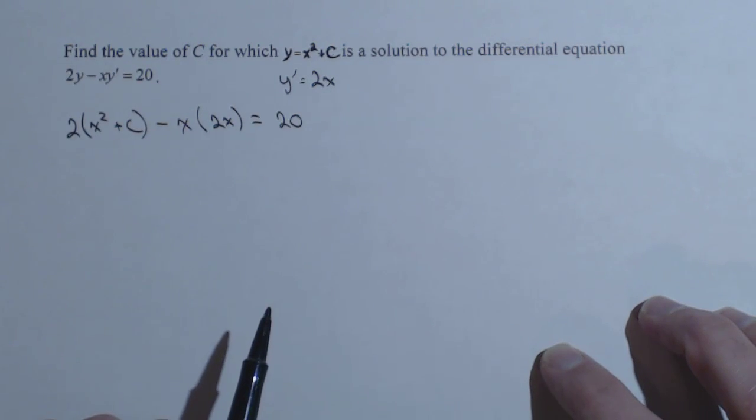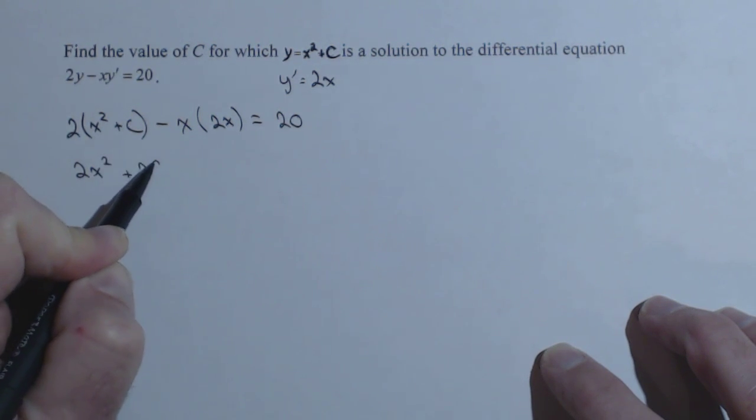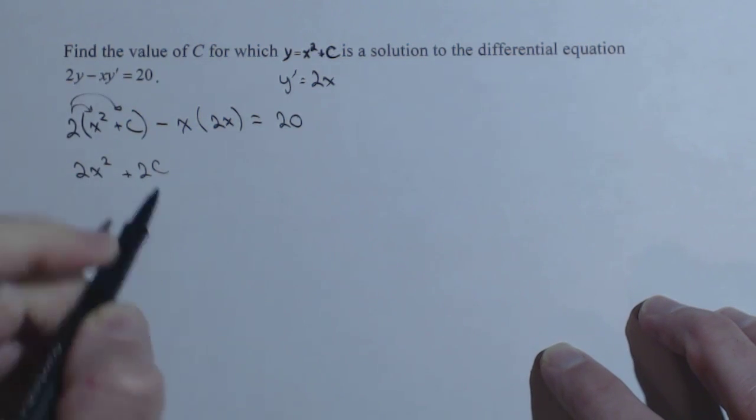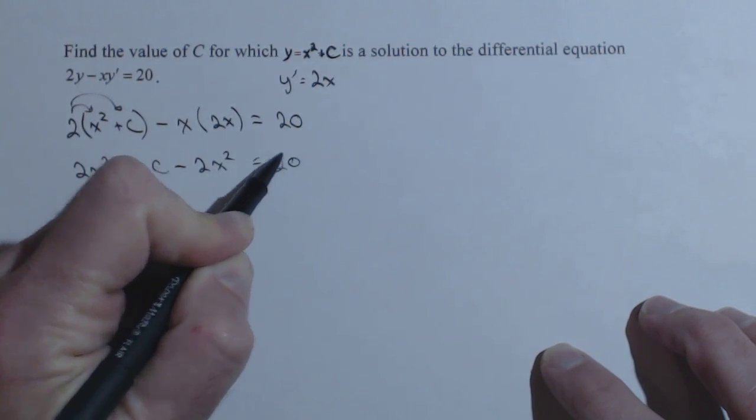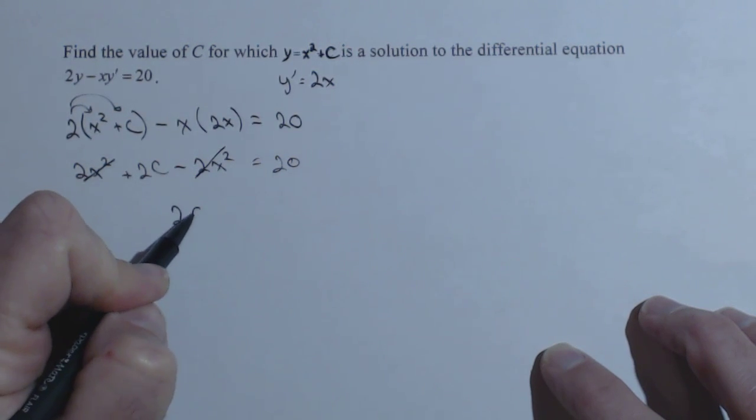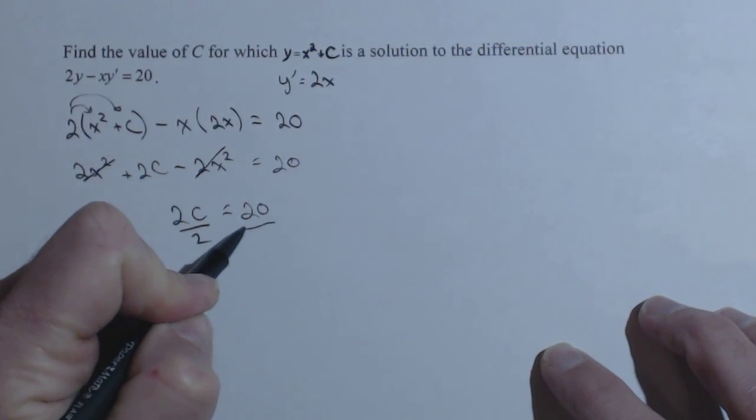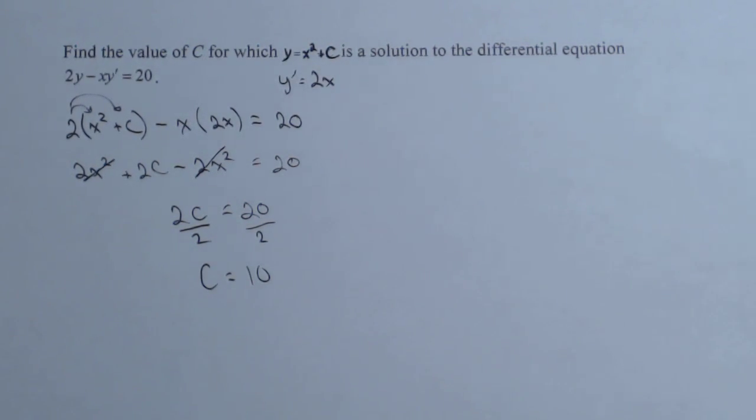This is going to give us an equation all in terms of x. We can distribute, so we have 2x squared plus 2C. That's from distributing this 2. And then here we get minus 2x squared equals 20. Those cancel. We get 2C equals 20. Dividing both sides by 2, we get that C equals 10 for this particular problem.